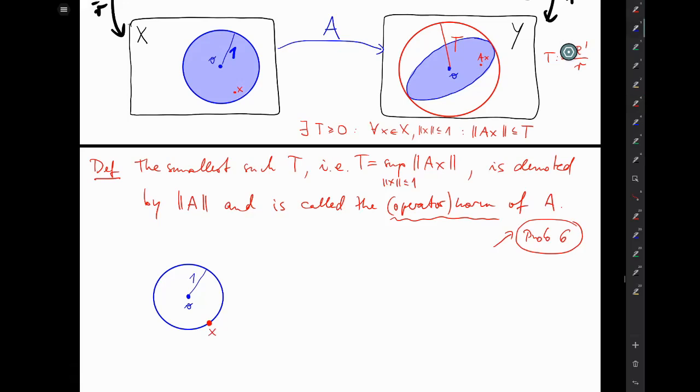Okay. Now what happens to that point under A, it ends up on the other side as A of x, somewhere on the boundary of that ellipse around the origin that we get as the image of the unit circle on the other side. And the largest, let me call it, radius of that ellipse T, like we called it before, is just what we defined to be the norm of A.